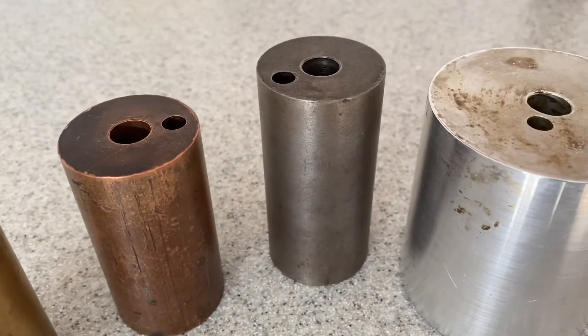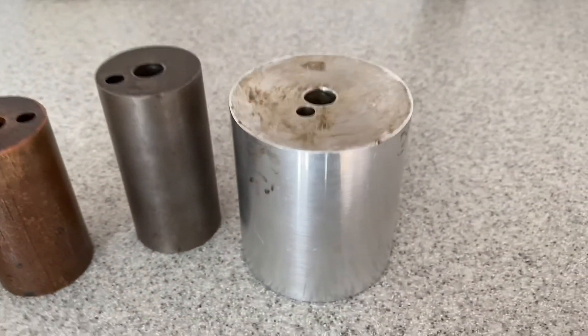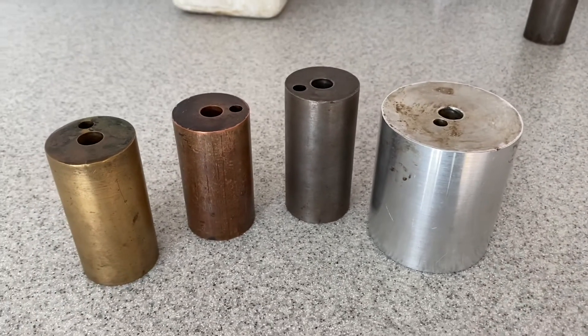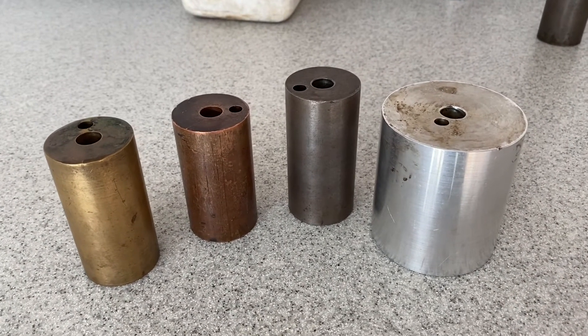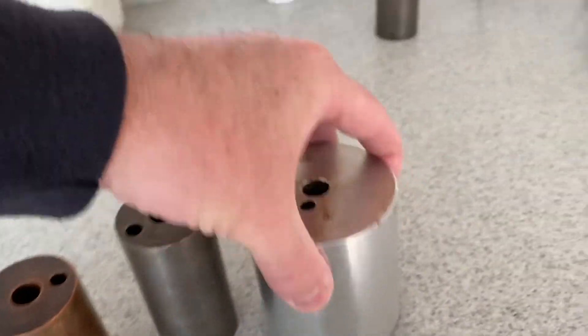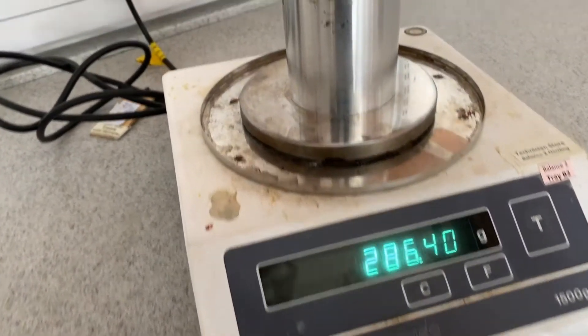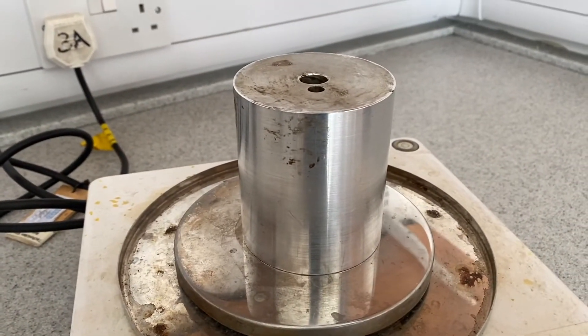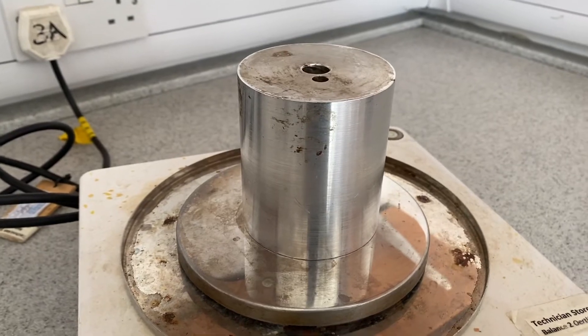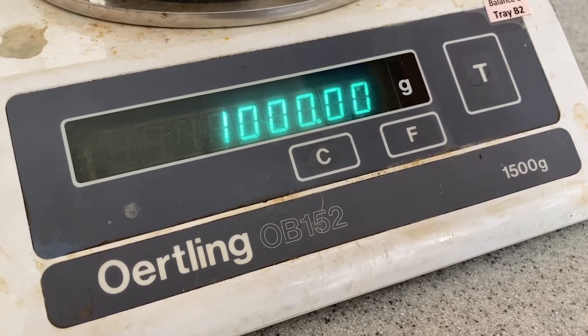There's brass, copper, iron and aluminium. And just to check, let's measure the mass of them. They should all be one kilogram. But better check. There we go. And the mass is 1000 grams, one kilogram.